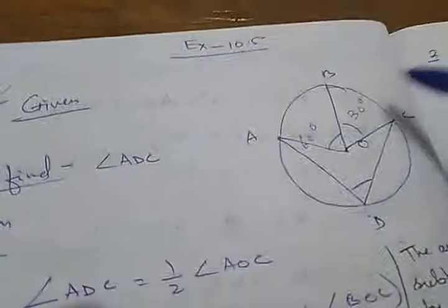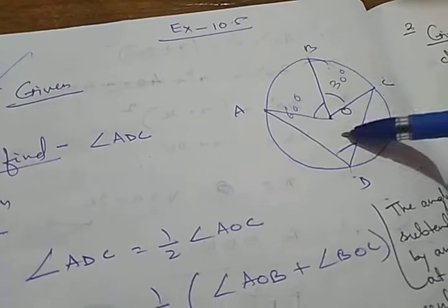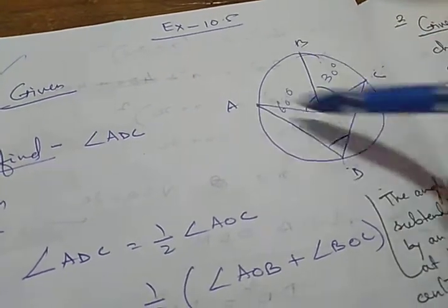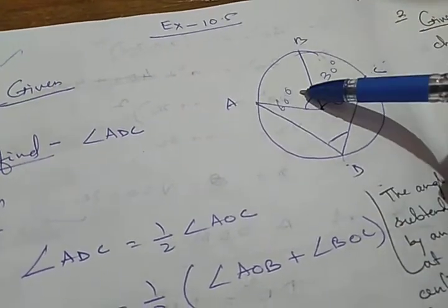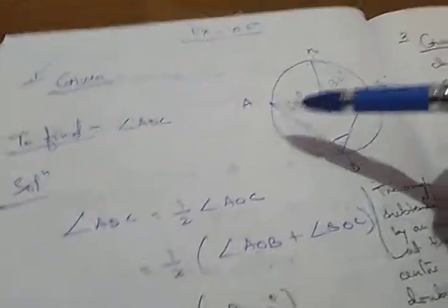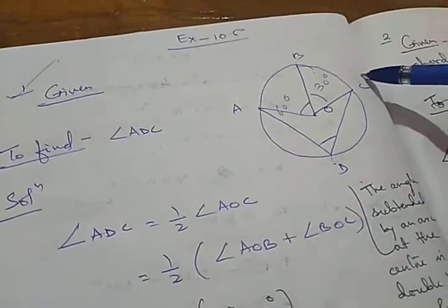Now, exercise 10.5, the first question. It is given: angle BOC is 30 degrees, and angle AOB is 60 degrees. With the help of that, they have asked you to find out angle ADC.